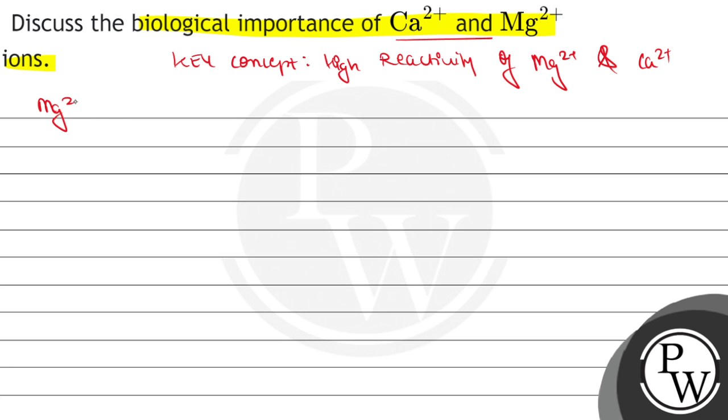So first of all, magnesium 2+ ions help to make the DNA stable during transcription. Transcription is the process when DNA converts into RNA.